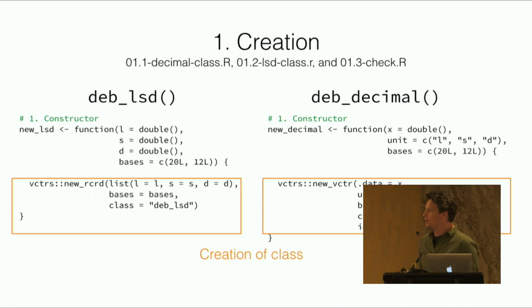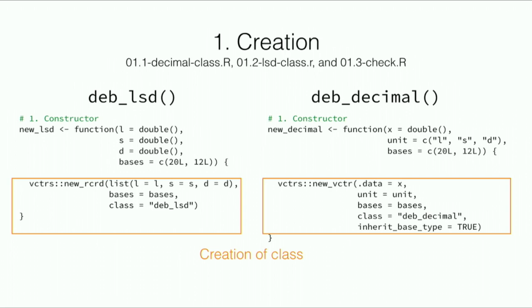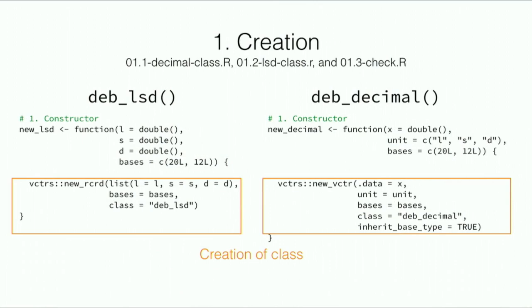Here we have the actual creation. With deb_lsd when we want to keep these tripartite structures, I'm going to use a record style vector. This is essentially a list that has equal vectors of equal length, and that gives us a basis from which we can have this tripartite structure. On the right it's just essentially a double vector.